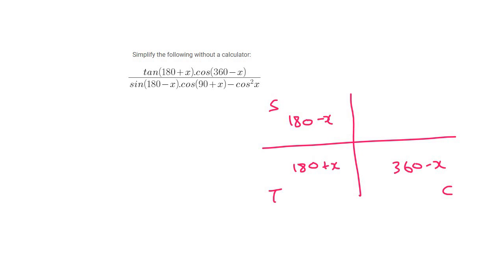Okay, so 180 plus x is here and it's where tan is positive. So this part here just becomes tan x. Then for the cos one it's just going to become cos x, then sin x.